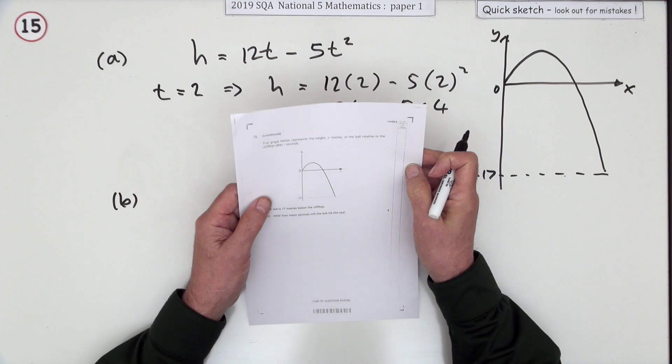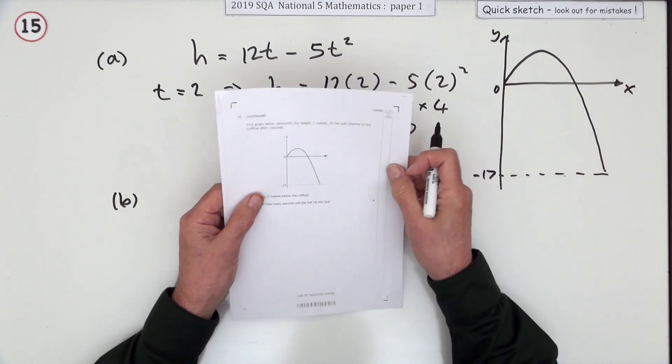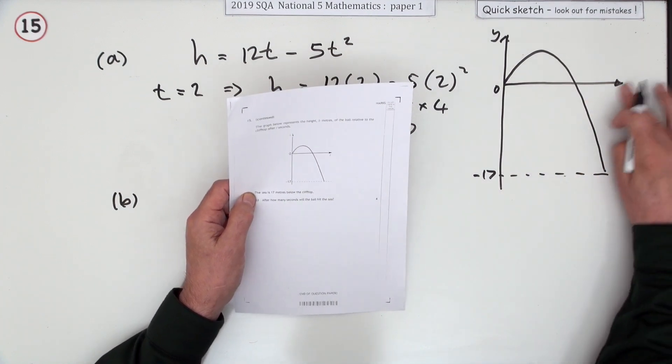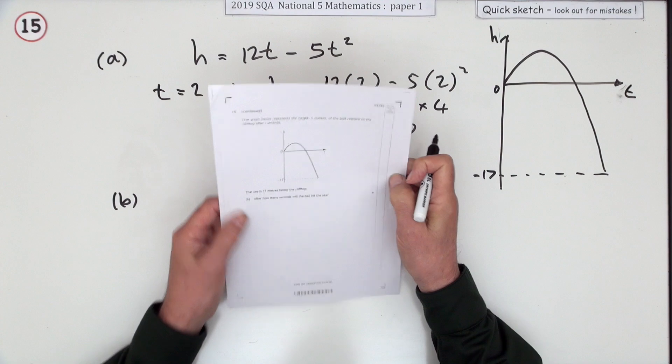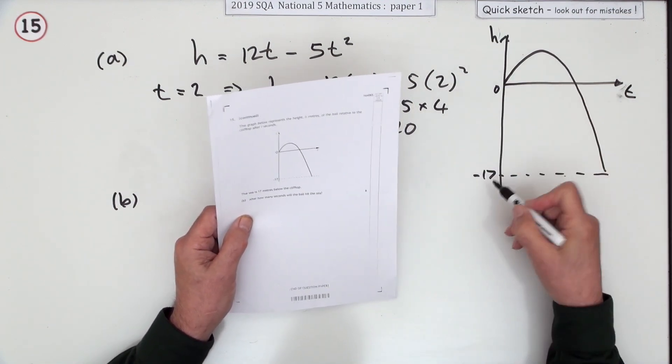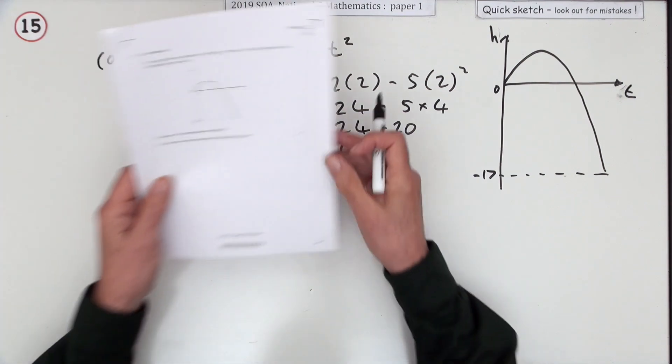Now part b shows you a graph of the path followed by the ball, of its height after a certain time. The sea is 17 metres below the cliff level, so that's why it's negative. And it says after how many seconds will the ball hit the sea?